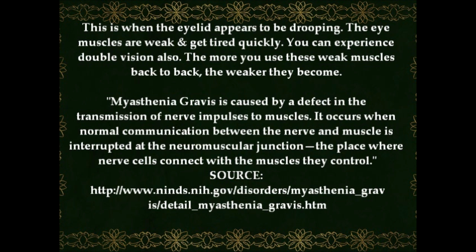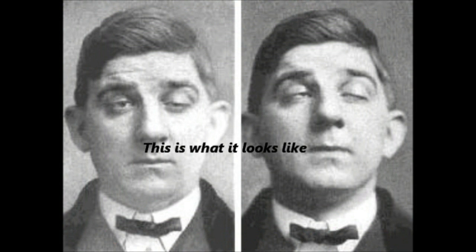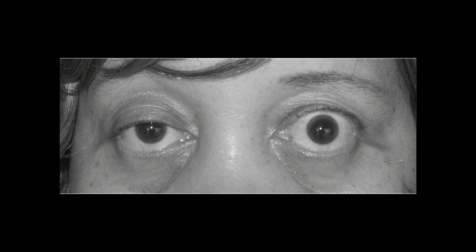Next is pterygium. This is when a tumor grows on the white part of your eye. It's not a cancerous tumor — it's a benign tumor rather than a malignant one. Like floaters, many people feel that pterygiums are actually parasites moving around inside the eye.